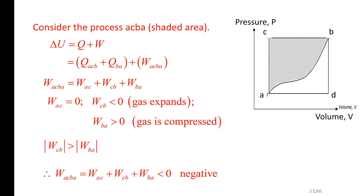By the first law, delta U equals Q plus W. W ACBA is negative — it is a clockwise cyclic process.